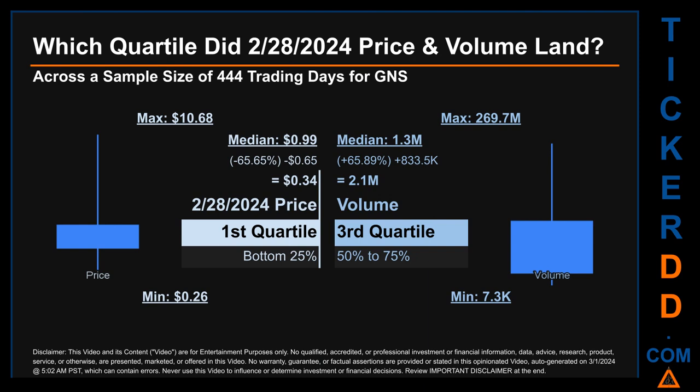The day's volume landed within the third quartile, that is within the 50% to 75% range of all sampled daily volume, which saw a max daily volume of 269.7 million and a minimum of 7.3 thousand. Quartiles tell us about the spread of a data set by breaking it into quarters, just like how the median breaks the set in half. Descriptively, GNS has a median price of $0.99. Therefore, February 28, 2024's price was lower from that middle marker by 65.65%, while the day's volume of 2.1 million was more than the median by 65.89%.